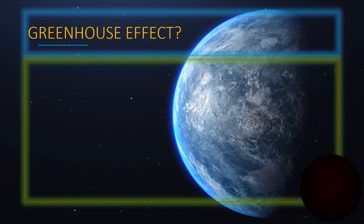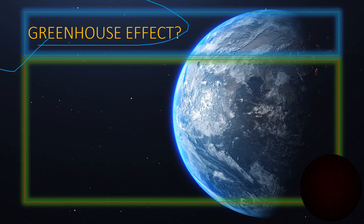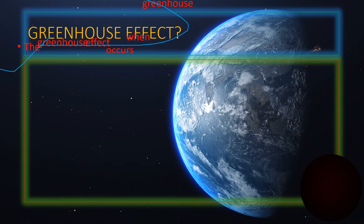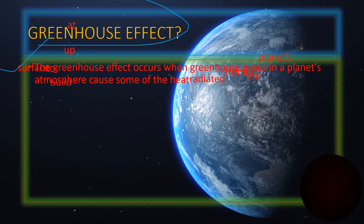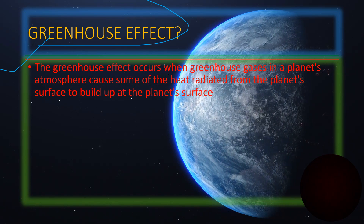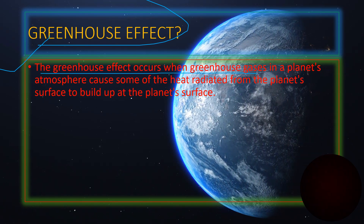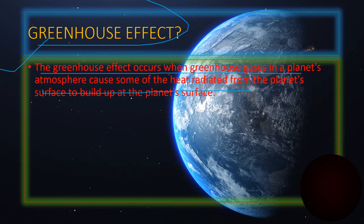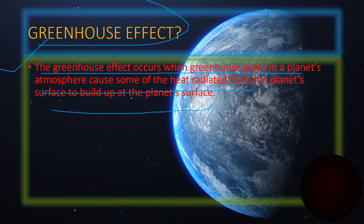What is the greenhouse effect, which is the main reason for the Earth's rising temperature? The greenhouse effect occurs when greenhouse gases in a planet's atmosphere cause some of the heat radiated from the planet's surface to build up at Earth's surface.